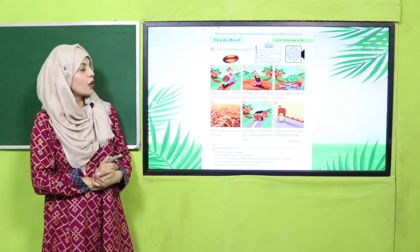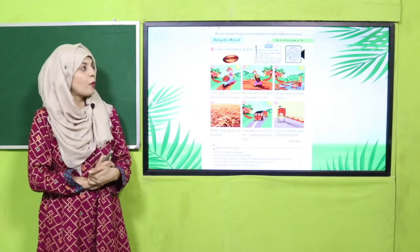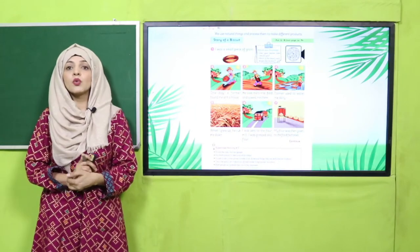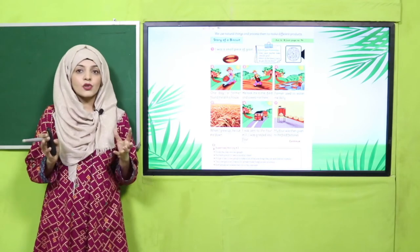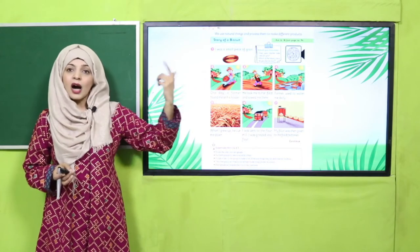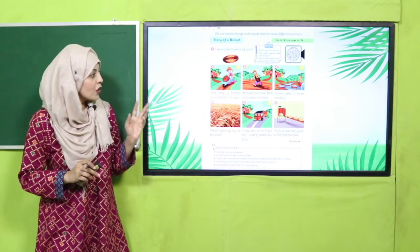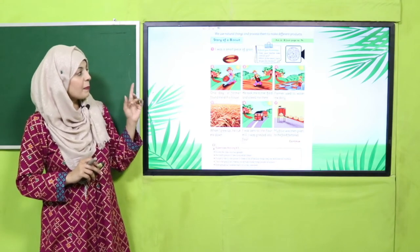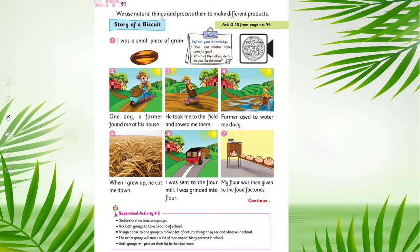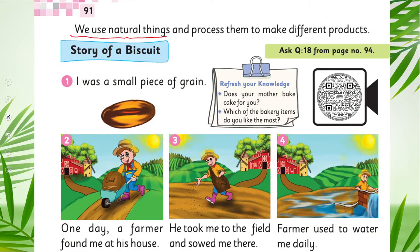Please open page number 91 in your books. Today we will do a very fun story — it is the story of a biscuit: how a biscuit is made, what its origin is, and how you get a yummy biscuit. You can see a lot of pictures on your screen — these are all steps of making the biscuit. Now put your fingers where I will read. In your book: "We use natural things and processes, and process them to make different products" — Story of a Biscuit.